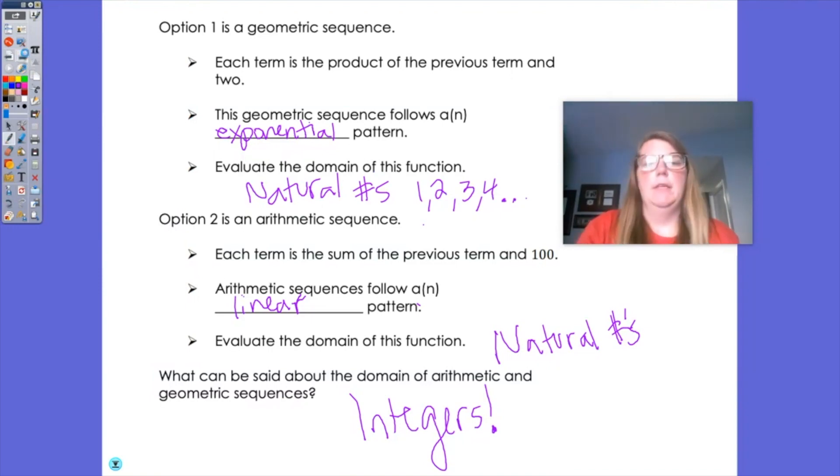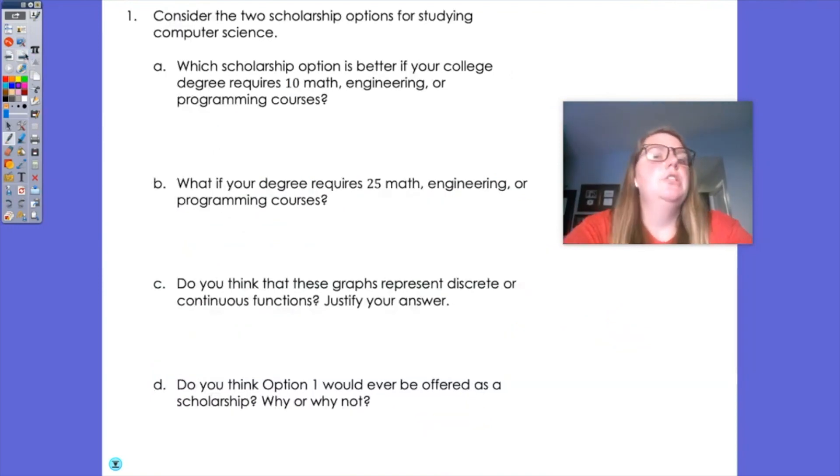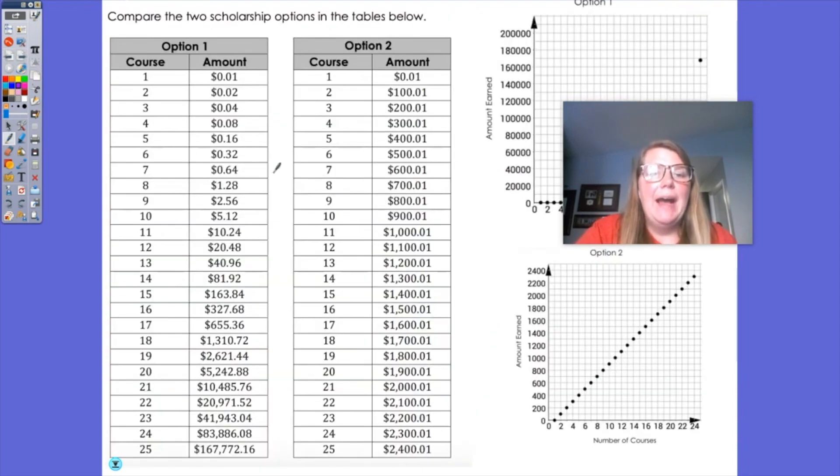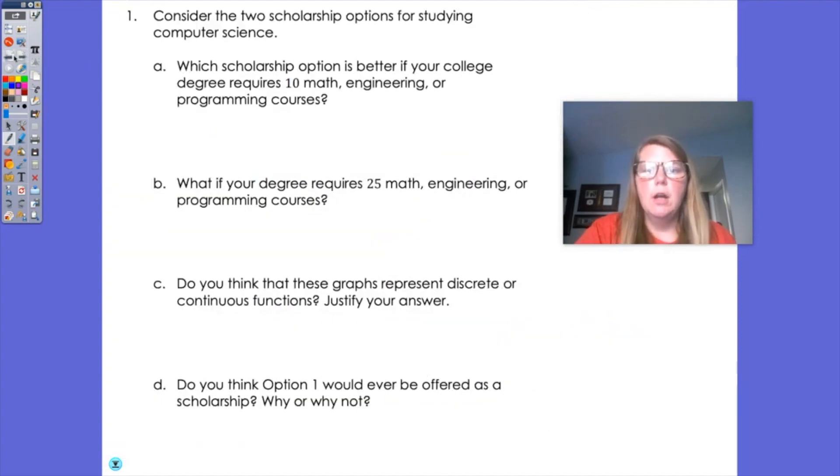So let's answer a couple of questions about this. So consider the two scholarship options for studying computer science. Which scholarship option is better if you're only taking 10 courses? So if we look back at our table at 10 courses, you're either going to make $900 or $5. I would definitely want to choose the $900. So we're going to select option two for that one, the linear option, the arithmetic option.